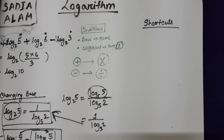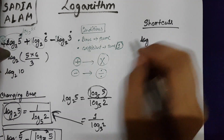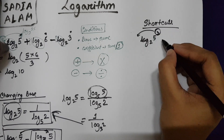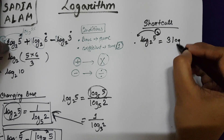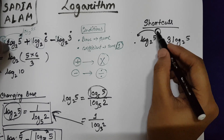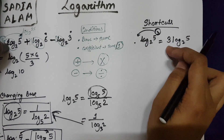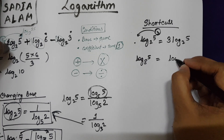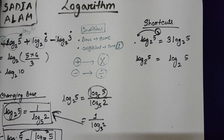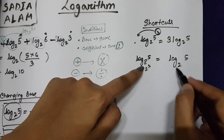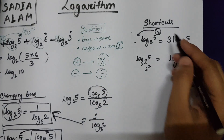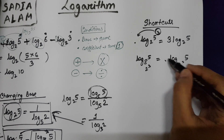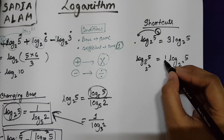For lengthy maths with many shortcuts: if you have log 5 base 2 and 5 is raised to power 3, this 3 can be shifted to become 3 log 5 base 2 — the power of the main number moves directly to the front. However, if you have log 5 base 8 and need to write it as log 5 base 2, since 8 equals 2 cubed, you are removing the power 3 from the base. Whenever you remove a power from the base, you must take its reciprocal — so it becomes one-third log 5 base 2.